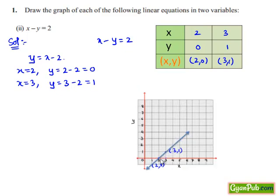So this is the required line joining the two points (2, 0) and (3, 1) that represents the given equation x minus y equals 2 graphically.